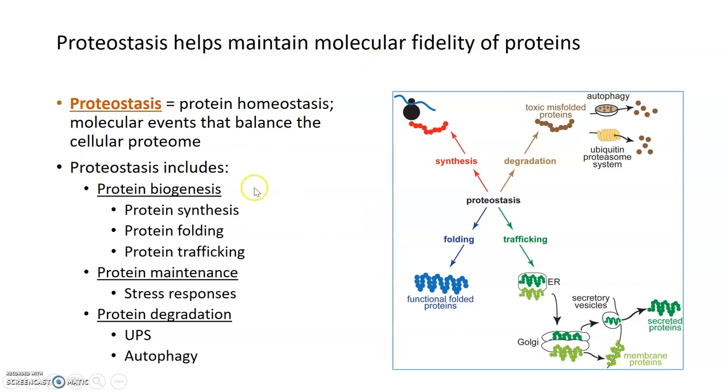One of those mechanisms that keeps molecules well structured and ordered so they can perform their function is a mechanism called proteostasis, or protein homeostasis. Proteostasis is really a collection of different molecular events that help to balance the cellular proteome, or all of the proteins within the cell.